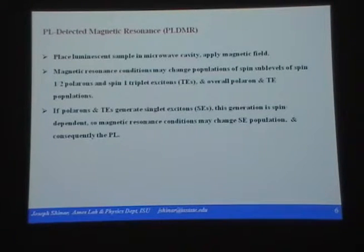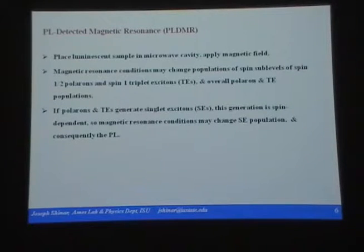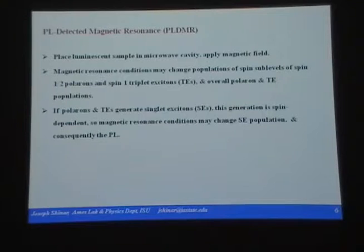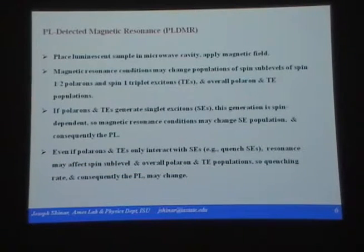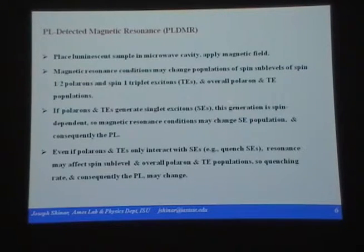So far, there is nothing to lead me to think I should see anything in a PLDMR experiment. What if the polaron population is changing? So what if the triplet exciton population is changing? In the PL, I'm not detecting polarons or triplet excitons — I'm detecting the radiative decay of singlet excitons, at least in fluorescent materials. So why should there be any PLDMR? Well, if polarons and triplet excitons generate singlet excitons, as they do in delayed fluorescence, then this generation is spin-dependent.